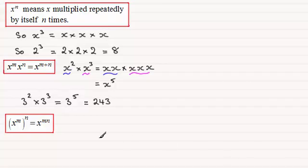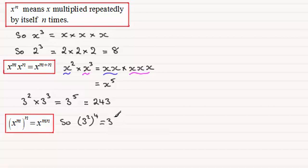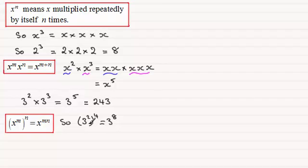We also have this rule: x to the power m, all to the power n, is equal to x to the power m times n. So if you had 3 squared all to the power 4, this would be 3 to the power 2 times 4, which would be 8. We've got 3 squared being multiplied repeatedly by itself 4 times over — 3 squared times another 3 squared times another 3 squared times another 3 squared — giving a total of 3 to the power 8.